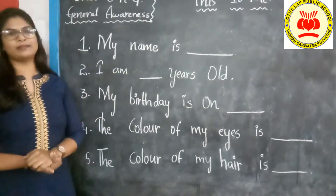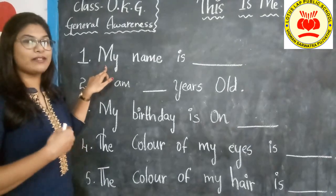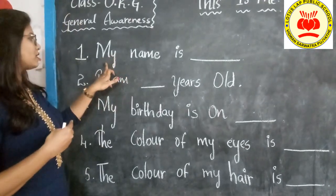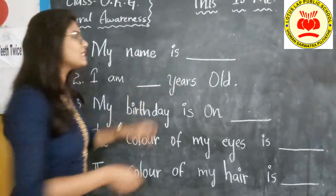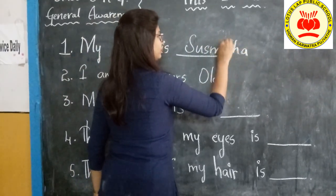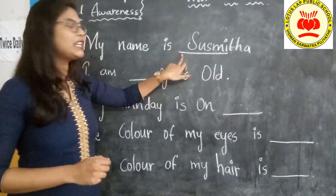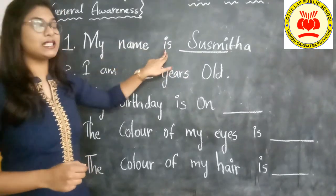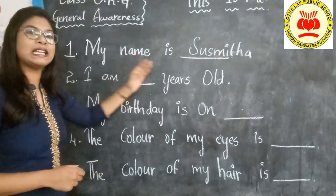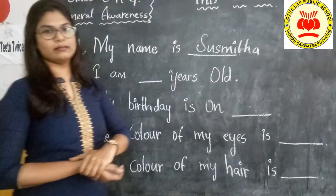Let's fill the slides now. So children, first point, we have to introduce our name. My name is — as my name is Sushmita, I am going to say 'My name is Sushmita'. You can write your name here. My name is Sanya. My name is Bharat. My name is Sylvia. You have your names — try to fill your name here.